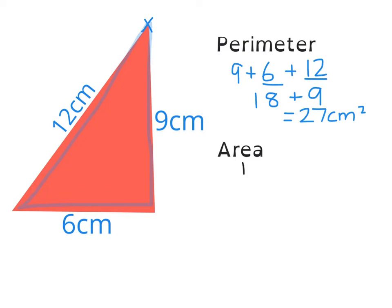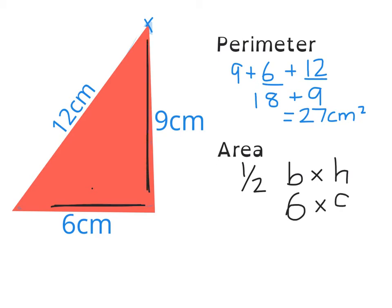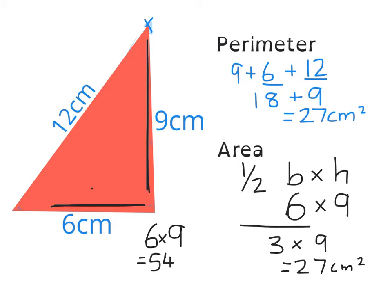The area of a triangle is half the base times the height. The base is 6 centimeters and the height is 9 centimeters. Half of the base is 3, times that by 9 gives 27 centimeters squared. Alternatively, you can multiply the base of 6 by the height of 9 to get 54 and then halve your answer at the end — you still get 27 centimeters squared.